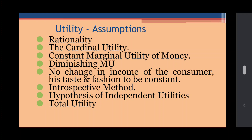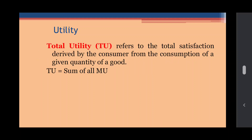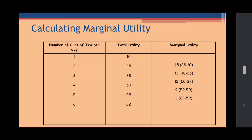Total utility is the sum of marginal utilities. Marginal utility is the addition to total utility. Total utility is the total satisfaction derived by a consumer from the consumption of a given quantity of a good — that is, TU equals the sum of all MU. Here I have given a table showing the number of cups of tea a person consumes per day, how much total utility they get, and the marginal utility as the addition to total utility.